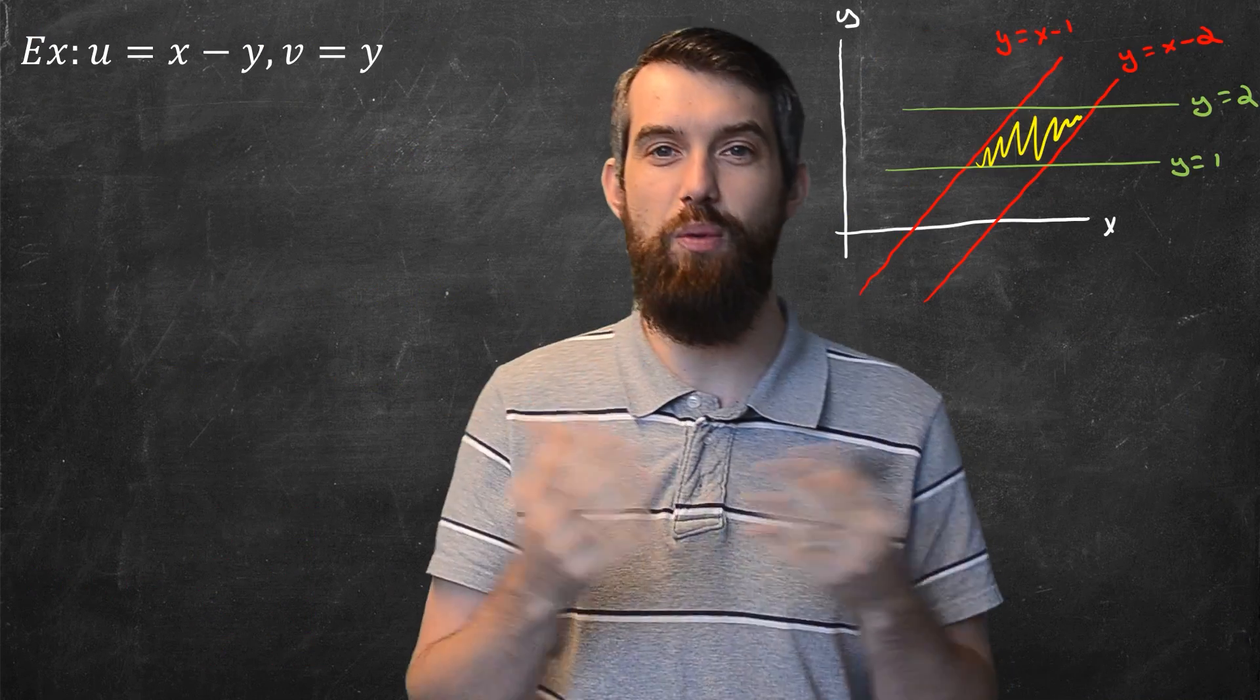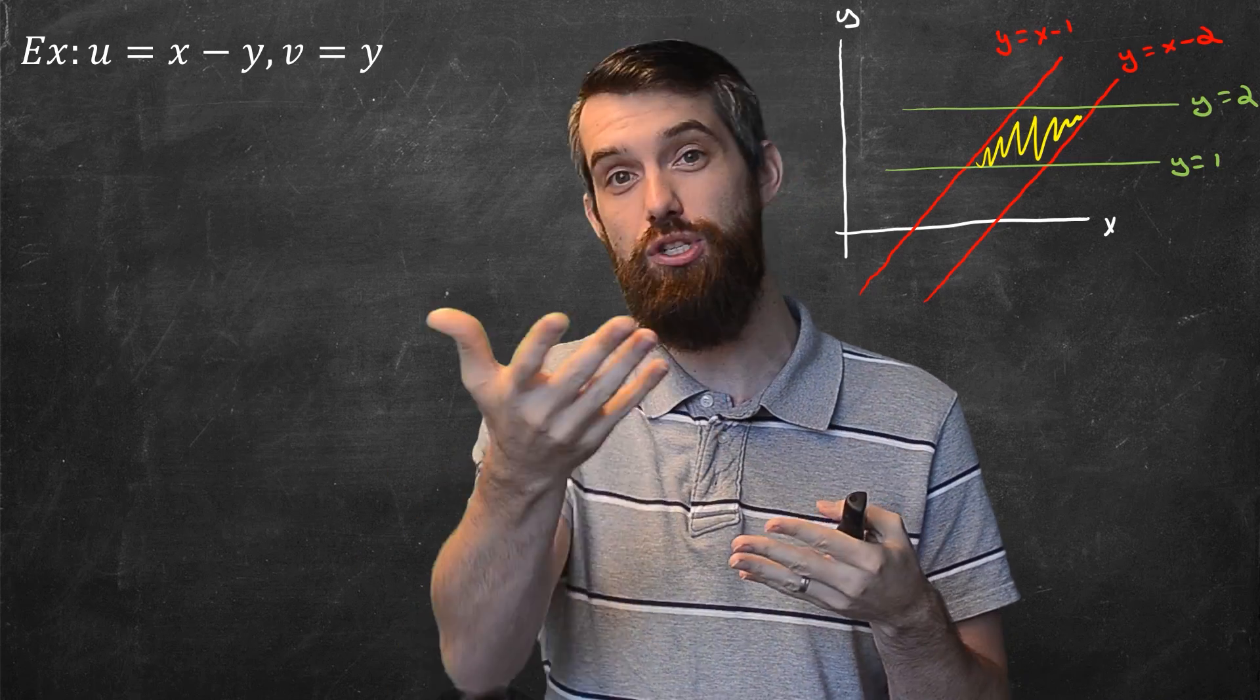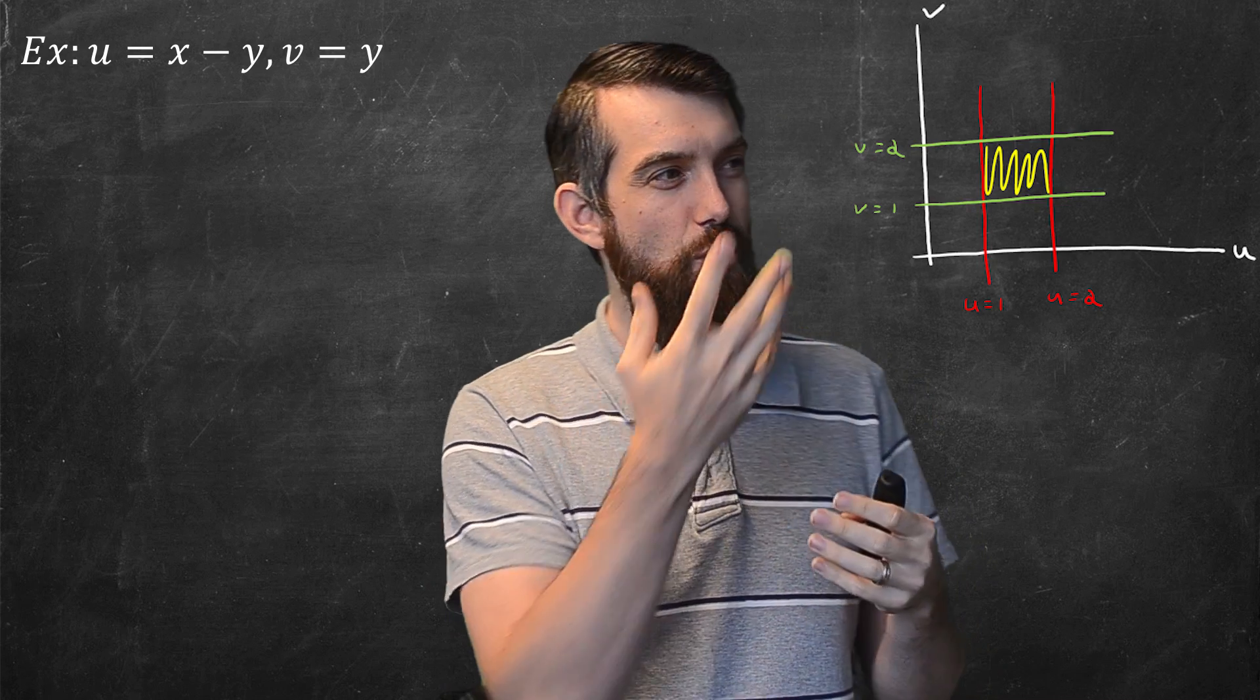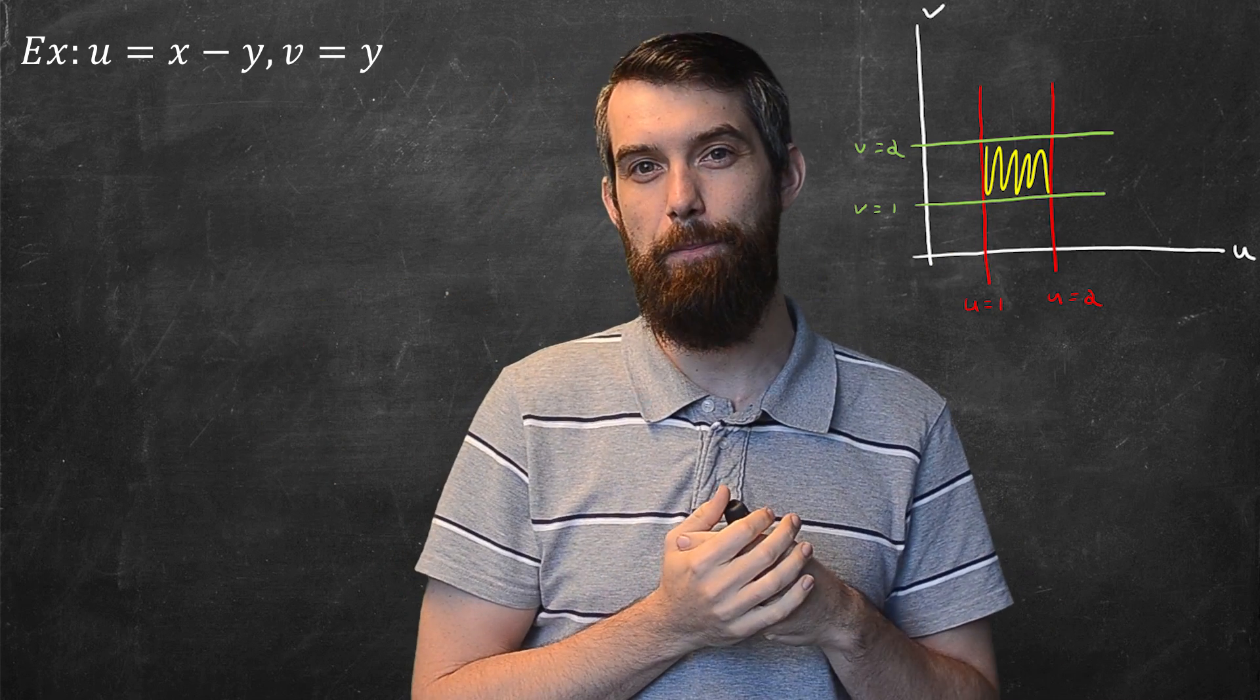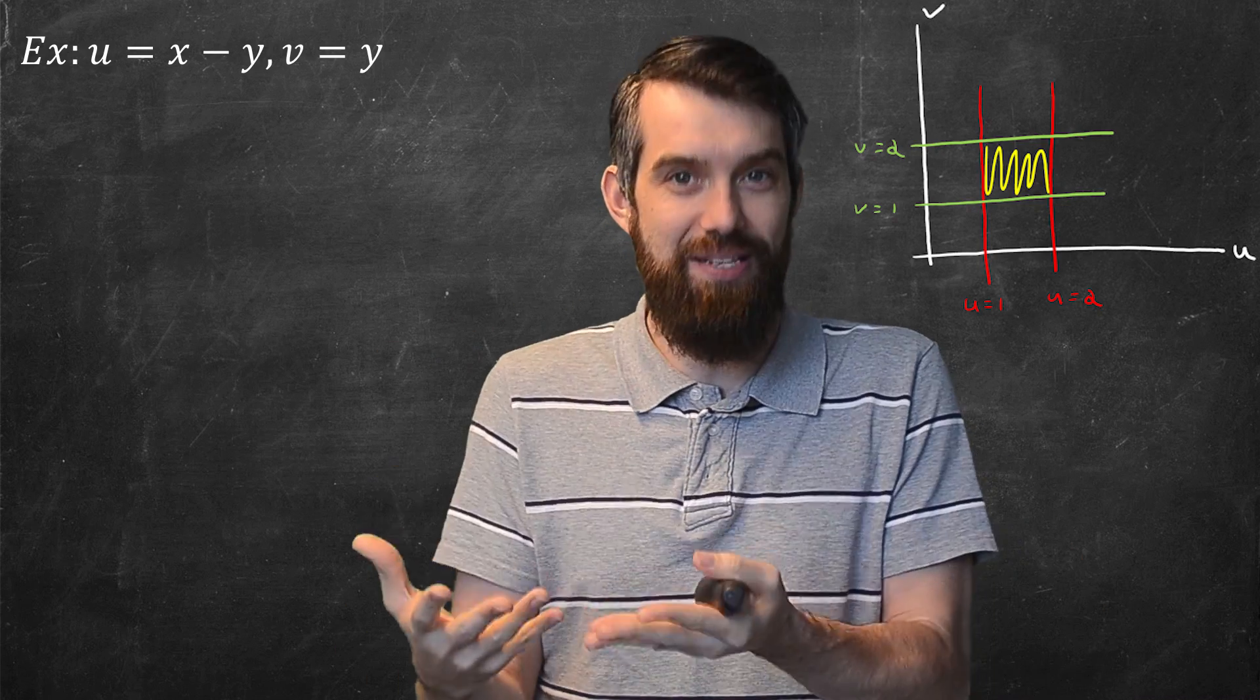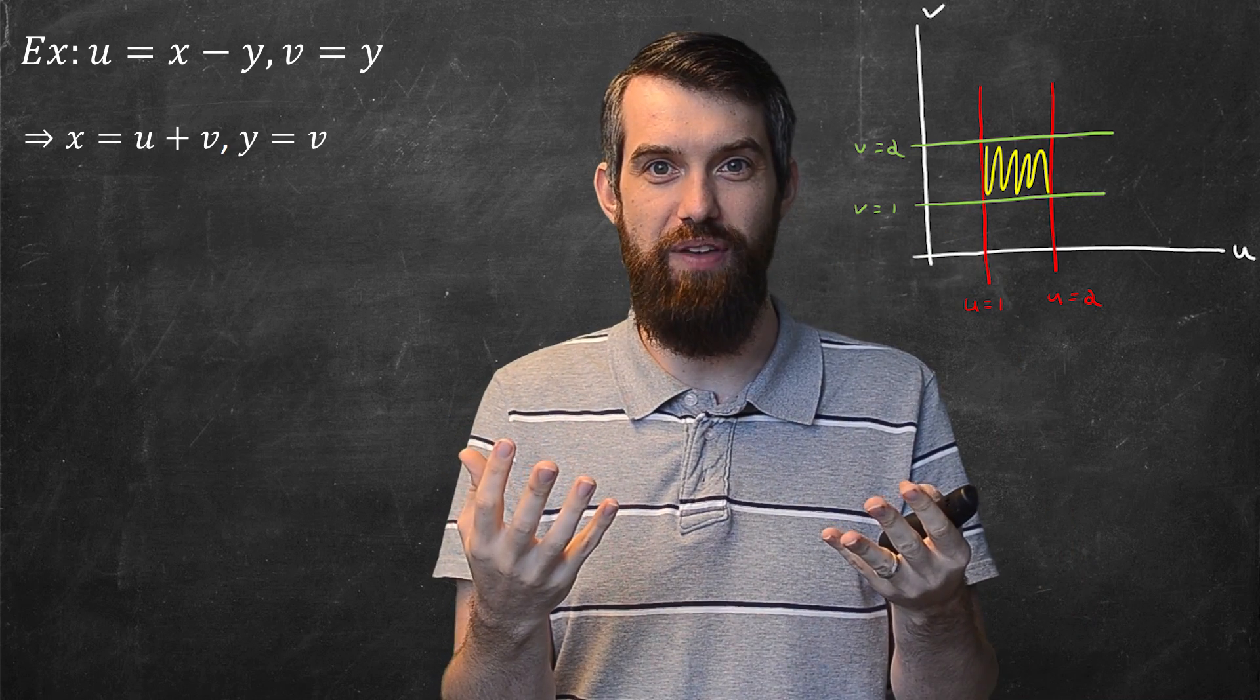All right, so let's look at the example that we had before where our u was x minus y and our v was just equal to y. And then if I take that exact same region, I now represent it in the uv coordinate system. It looks a lot nicer.